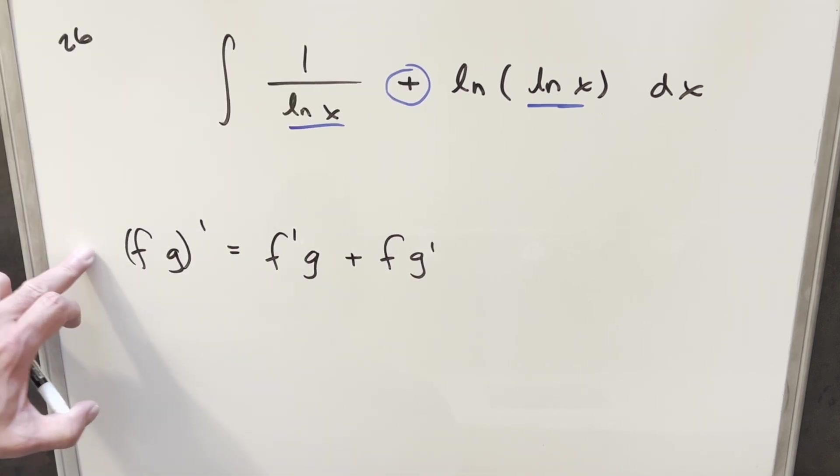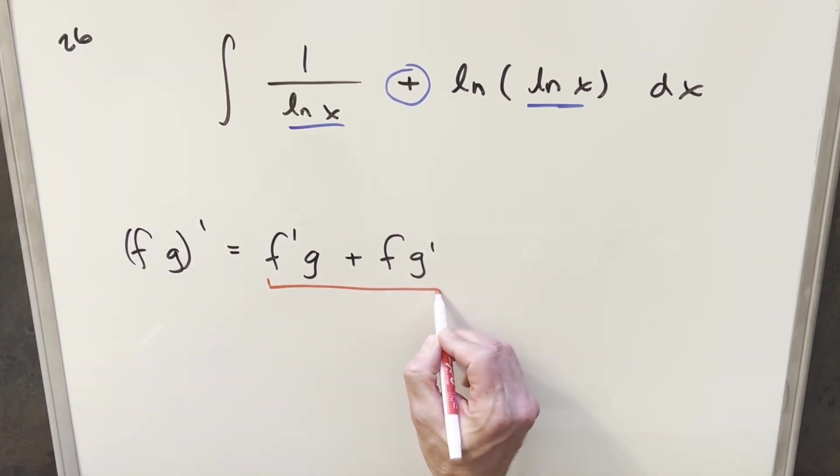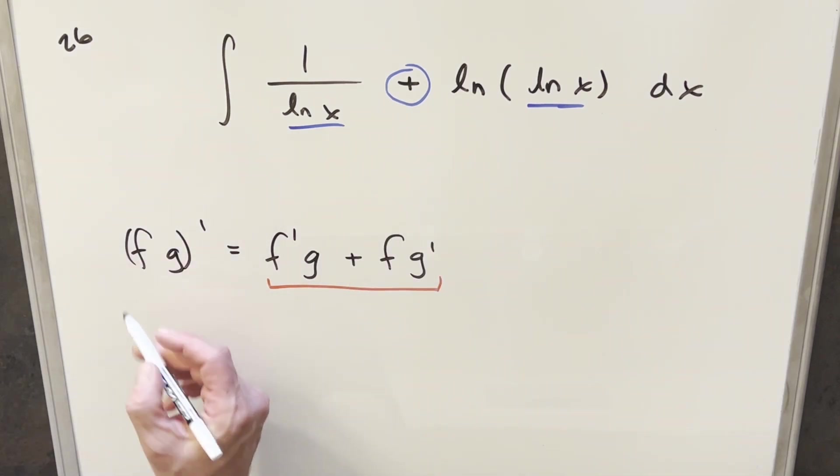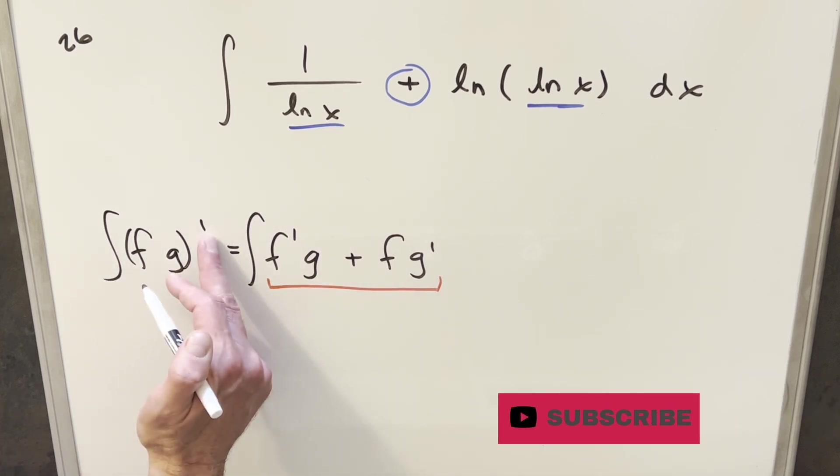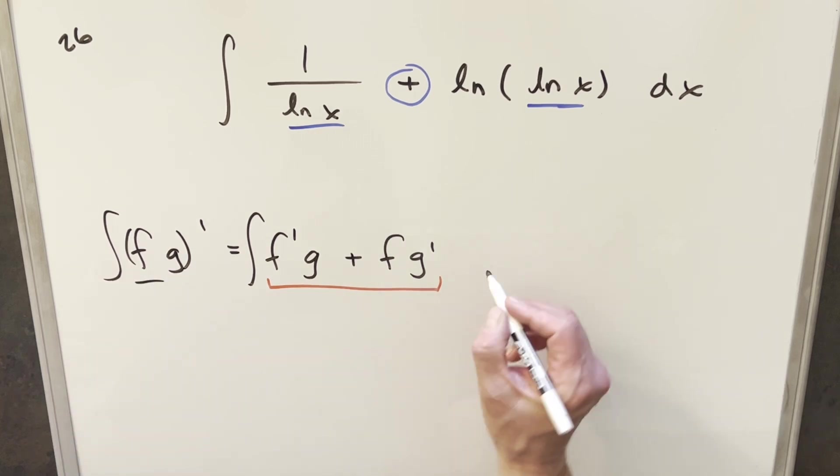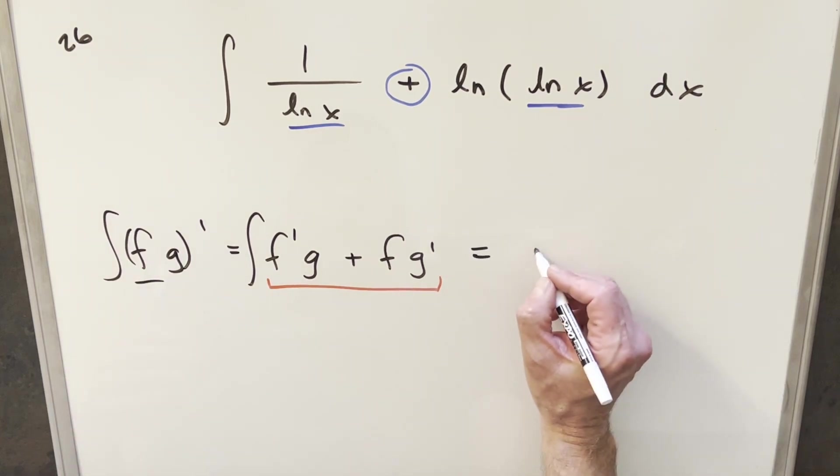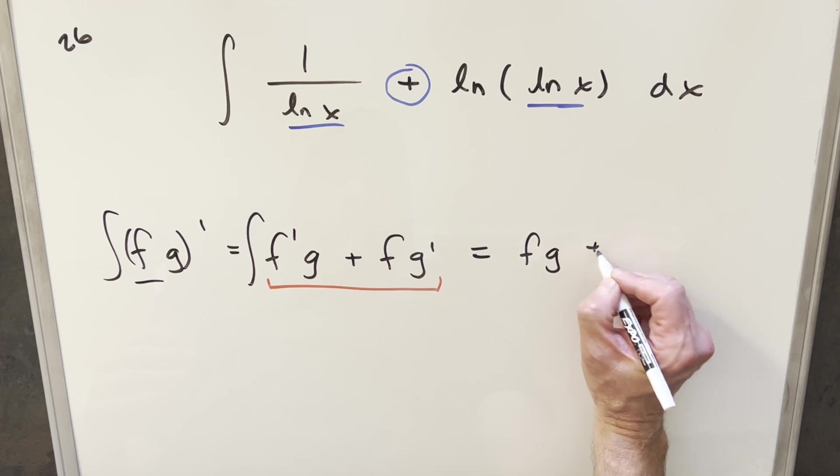Just looking at the product rule here and comparing to the integral, we want everything here to match what's inside our integral. Let's turn this into an integral by integrating on both sides. On the left side, we've got the derivative of f of g, and the integral of the derivative is just what's inside here. So this whole thing is just going to be f times g plus c.